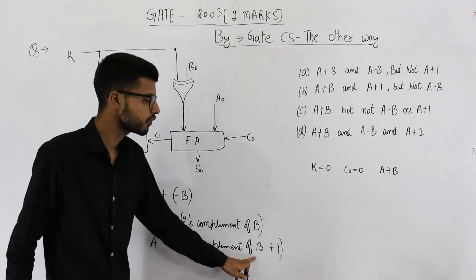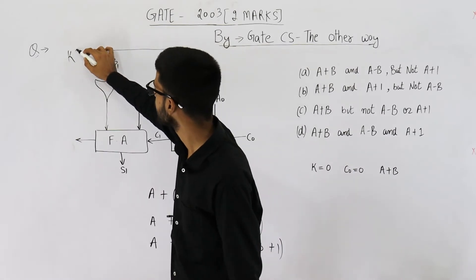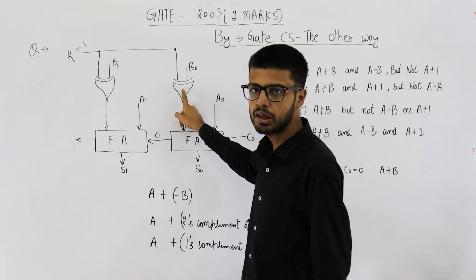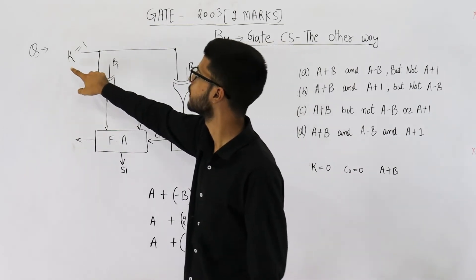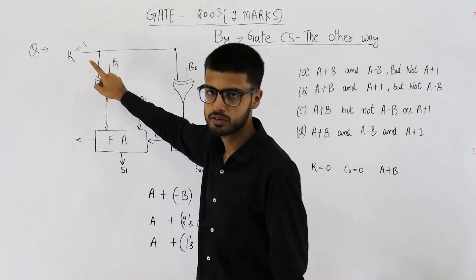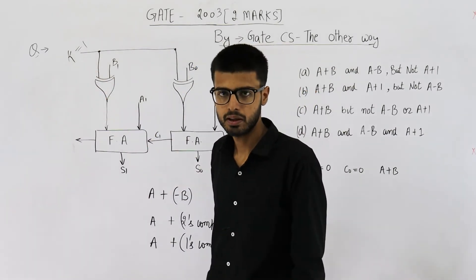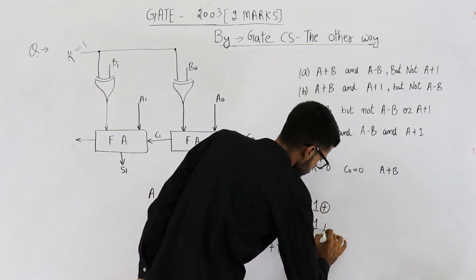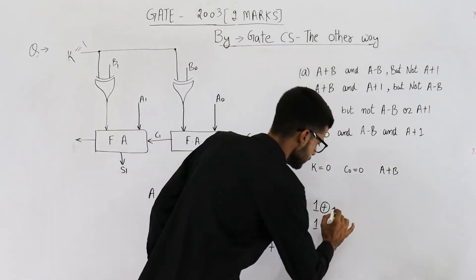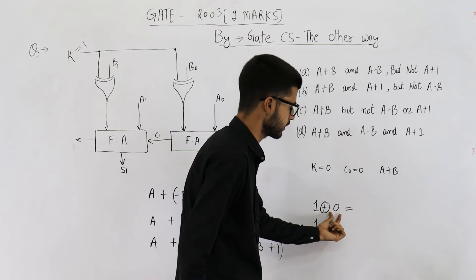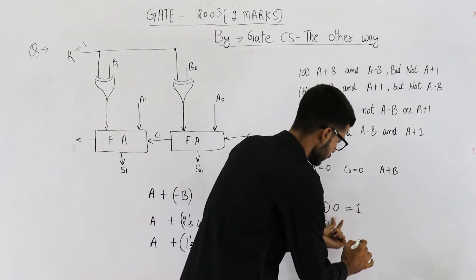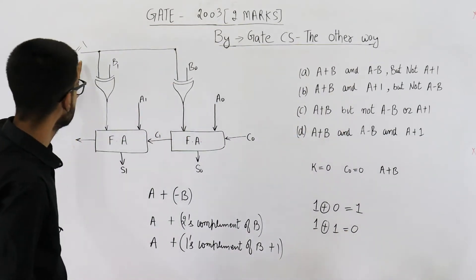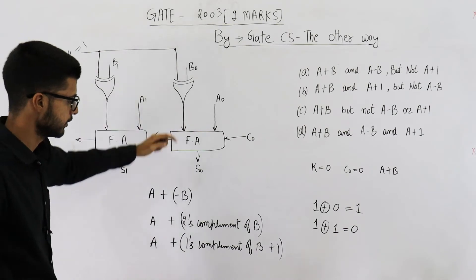The 1's complement of b can be obtained by making k equal to 1. The conditional inverter will invert input b whenever k equals 1 — when one input of the XOR gate is high, the other input is inverted. If the other input is 0, the output is 1; if the other input is 1, the output is 0. So we have now obtained the 1's complement of b.